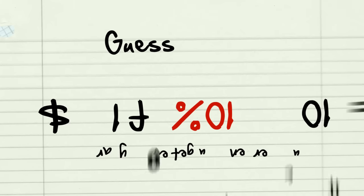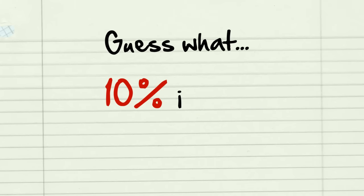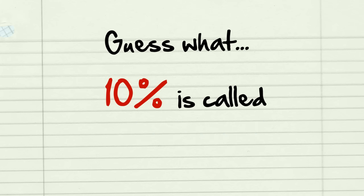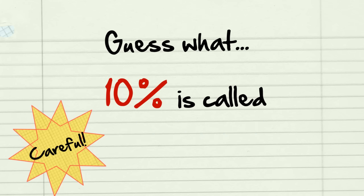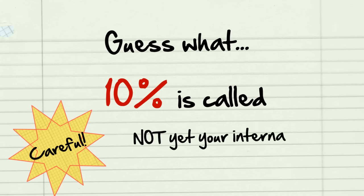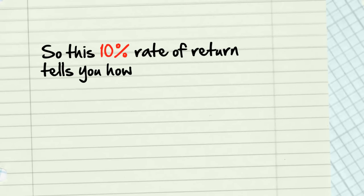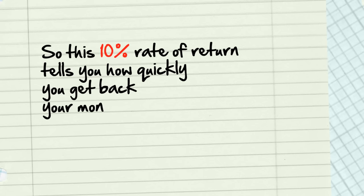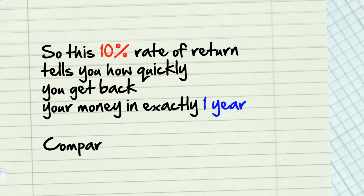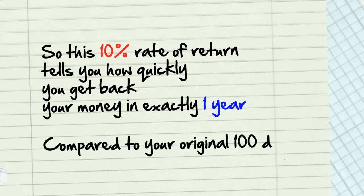Guess what? This 10% is called your rate of return. But careful — this is not yet your internal rate of return. This 10% rate of return tells you how quickly you get back your money in exactly one year, compared to your original $100.